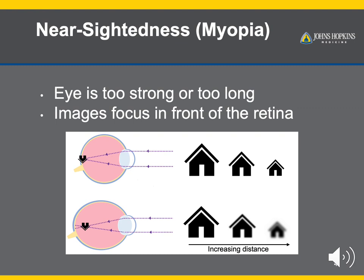Myopia, also known as nearsightedness, is when the focusing power of the eye is too strong or the eye is too long, such that the image of an object is focused before it reaches the retina. This problem is worse when objects are far away, making things further away especially blurry for people with myopia. Myopia rates increase throughout childhood, with the greatest number occurring during and after puberty when the eye undergoes a growth spurt. As the eye grows, myopia also tends to become more severe before eventually stabilizing upon reaching adulthood.